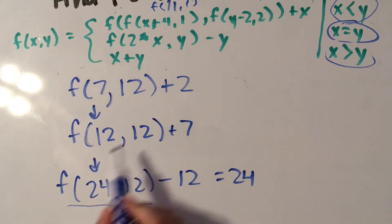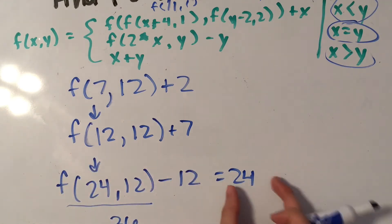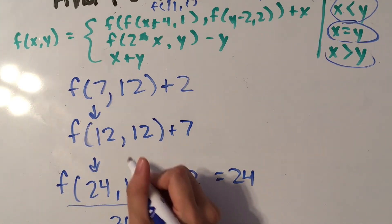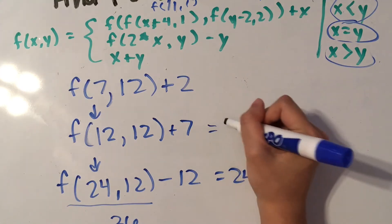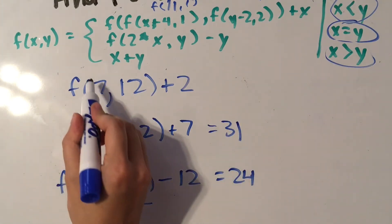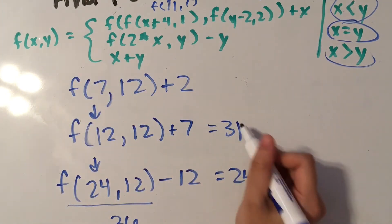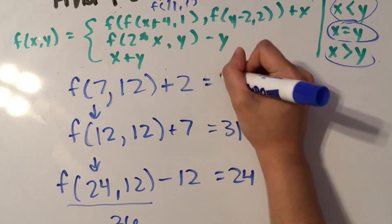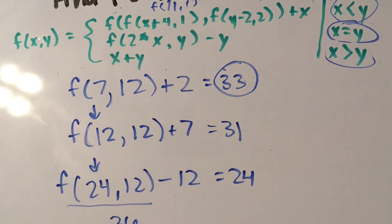And so we said that this function simplifies to all of this. So f of 12 comma 12 is equal to 24. So 24 plus 7 is 31. And then we said that f of 7 comma 12 equals 31, so we're just going to add 2 to that to get 33. And that's your answer.